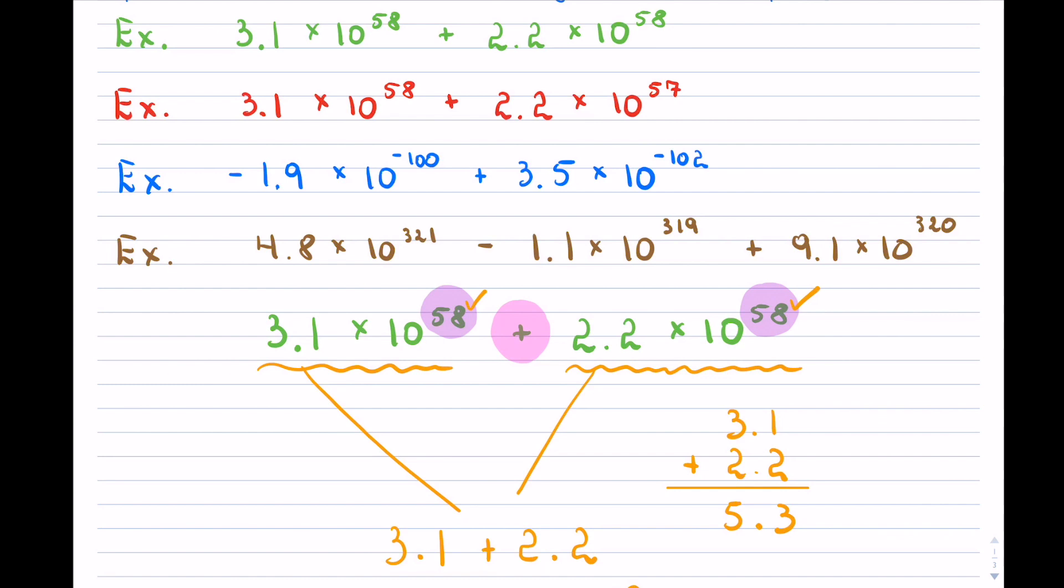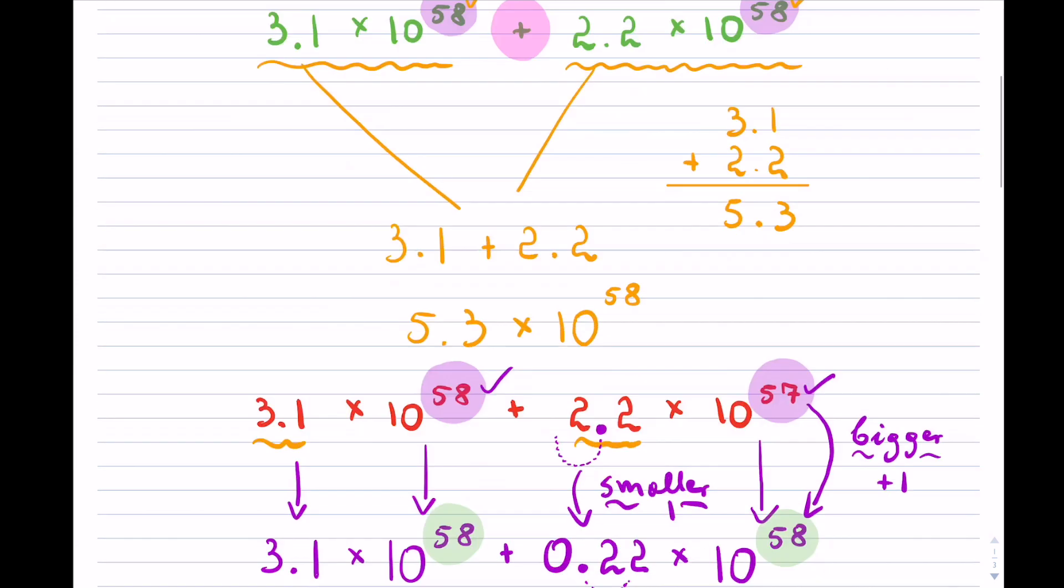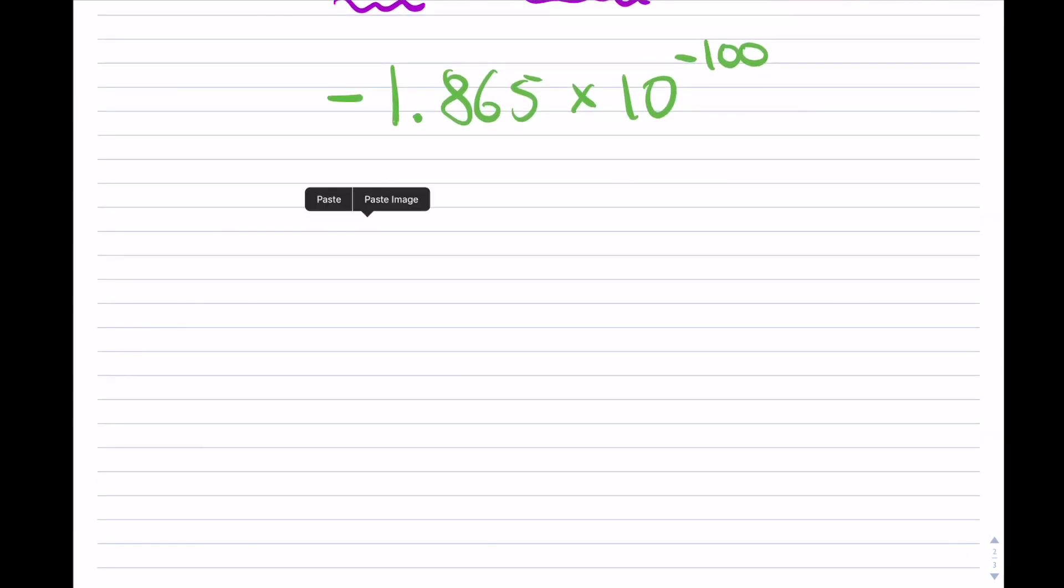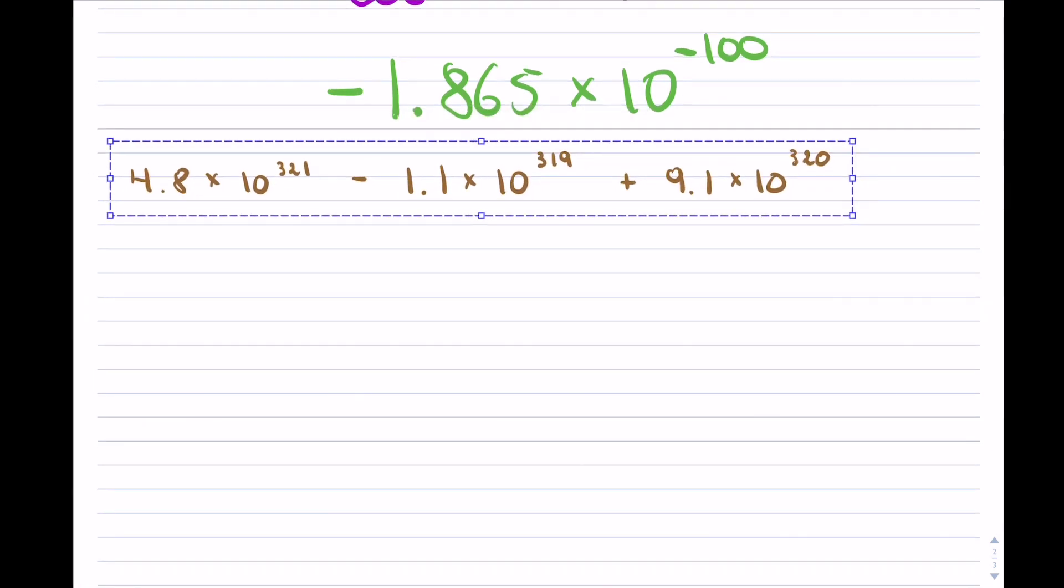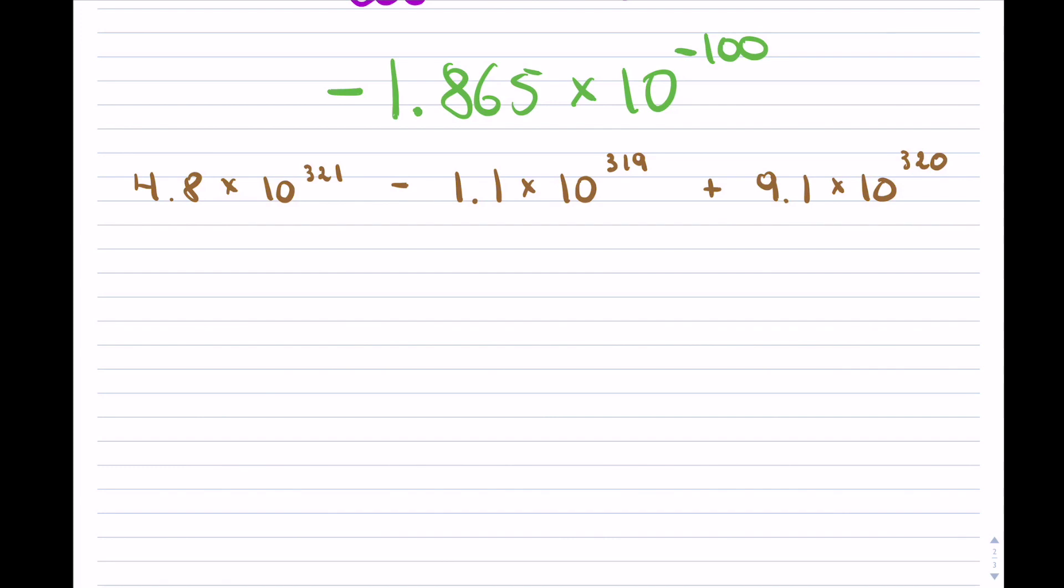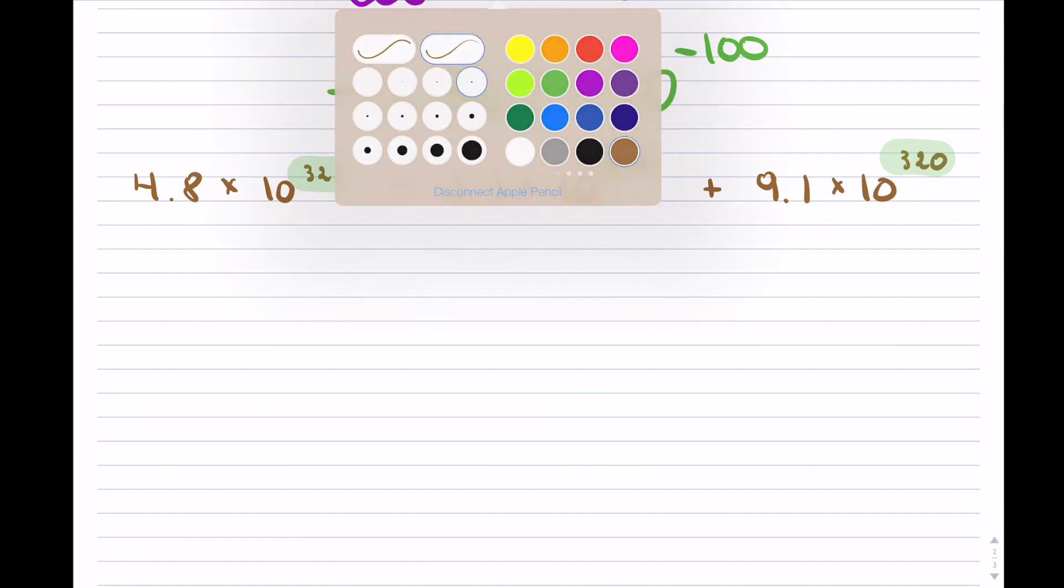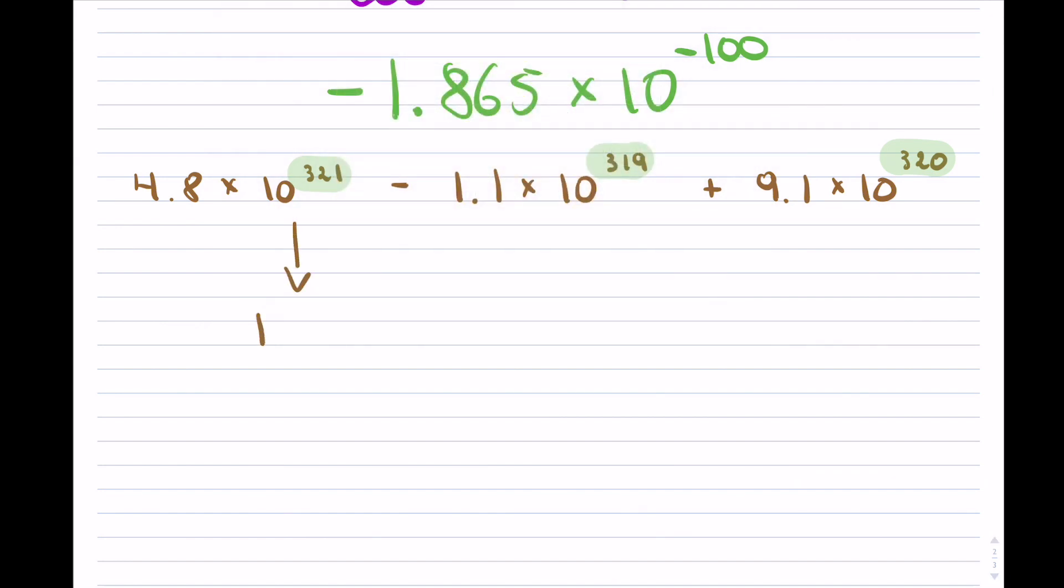Let's take a look at the last example, which is a little torturous because it has three instead of two scientific notation numbers. I'm going to again look at the exponents; actually, in this case, they're all different. I will pick the largest one; in this case, they're positive. So I will take the biggest one from here and change all the other ones to be identical to it.